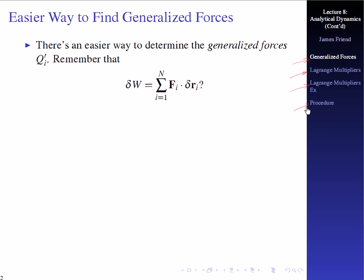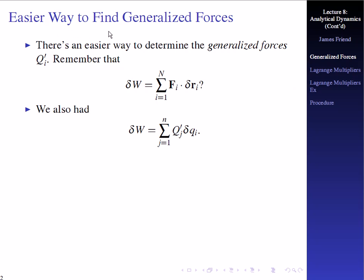With regard to generalized forces, there is an easier way to determine the generalized forces Q-prime sub i. Remember that the prime is from the non-conservative forces, and this presumes that the conservative forces are handled using the potential energy function V. Remember that delta W is equal to the sum of the forces dotted with virtual displacements. The virtual work from non-conservative forces is defined as Q-prime sub j times delta Q_j.